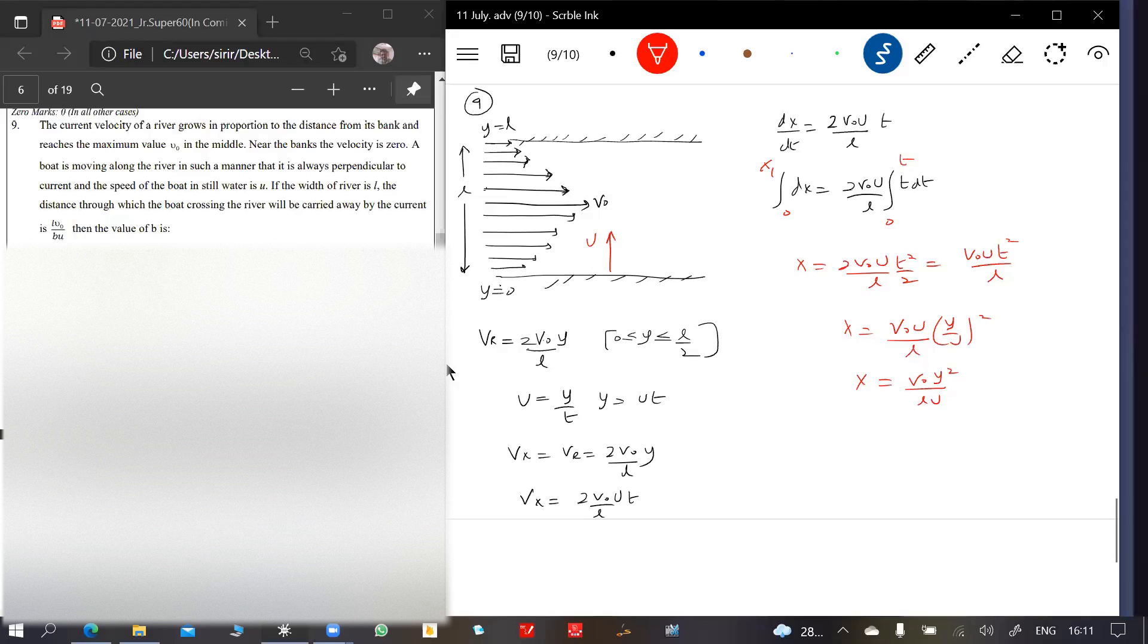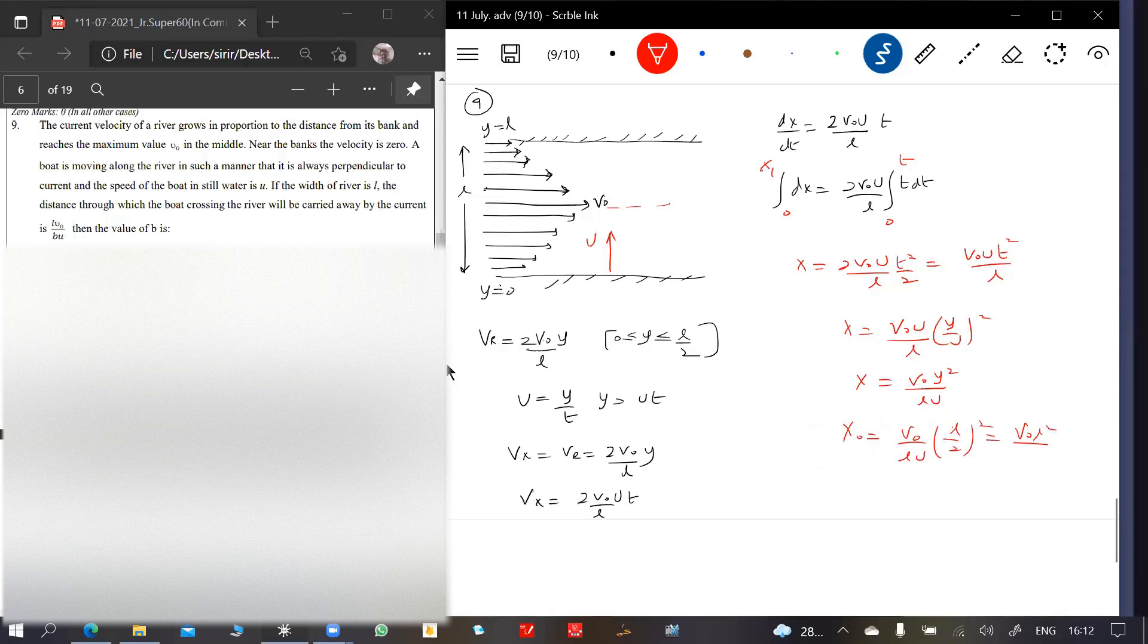Some sort of parabolic. The path will be, so now we are asking what is the drift? Substitute Y equal to L by 2, you will get the drift till here. Then again it will be carried, you add up that one, the total drift will be... We will calculate the drift X0: V0 L U, what is Y? Y is equal to L by 2 whole square, so V0 L square by, V0 L by 4U. This is the drift. So what is the total drift? Will be 2X0.